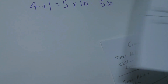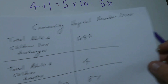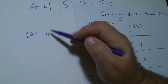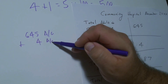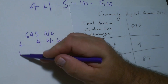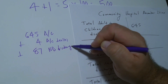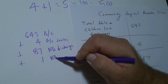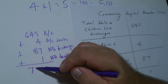In the denominator we have the total number of discharges including deaths. We have 645 adult and children live discharges, plus 4 adult or children deaths, plus 87 newborn discharges, plus 1 newborn death. We add those together and we have 737.